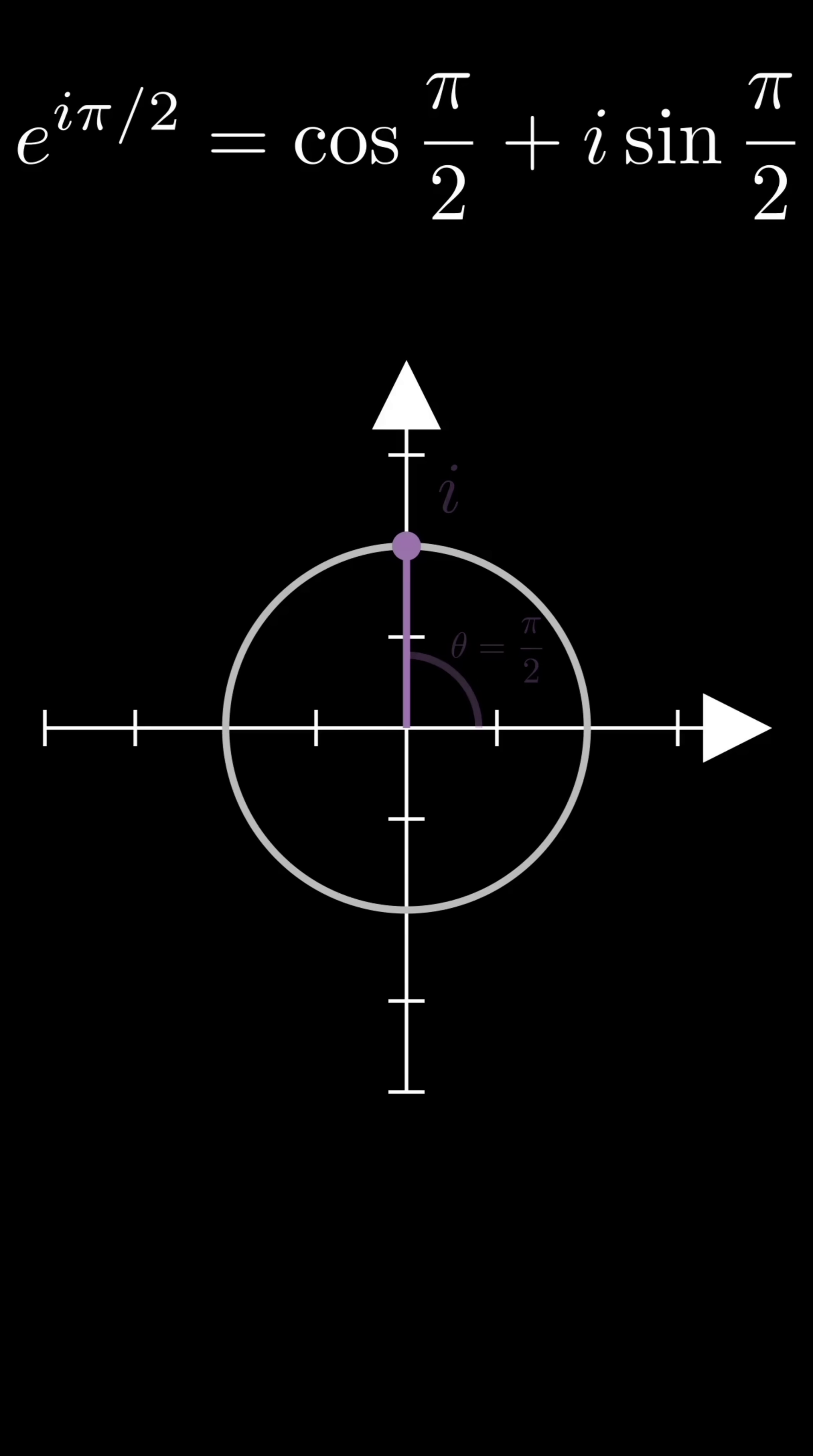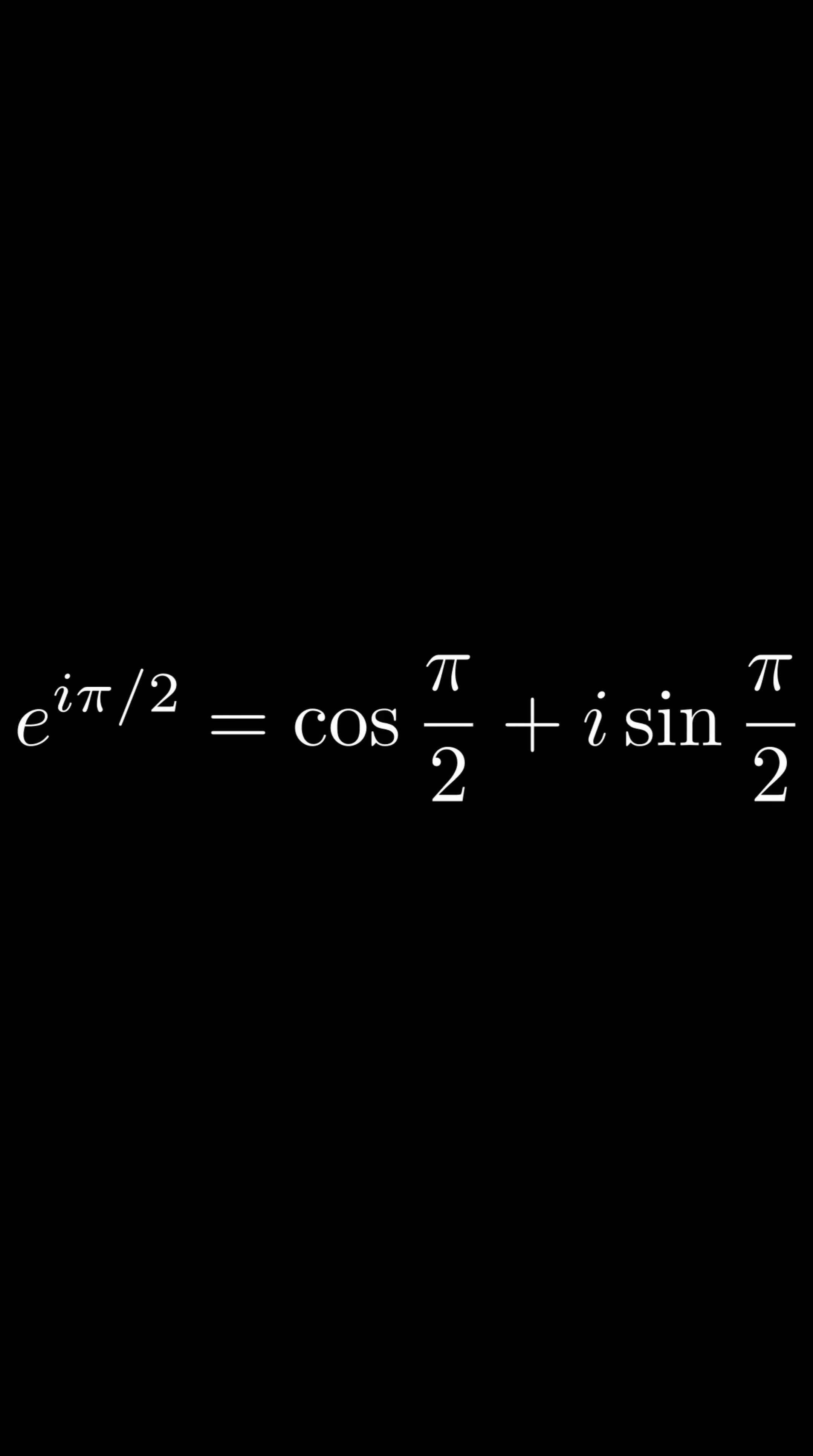we can see that e to the i pi over 2 equals cos pi over 2 plus i sine pi over 2, which evaluates to 0 plus i. So i is equal to e to the i pi over 2.